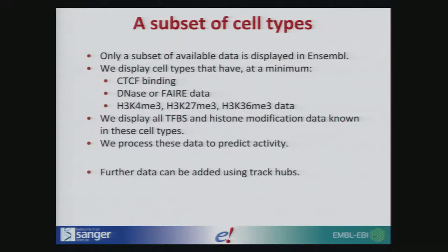We're working with a subset of cell types. In order to build our predicted promoters, enhancers, and insulators, we need CTCF binding, a marker of open chromatin, and these three histone modifications. If we have this data for a cell type, we will then carry out our regulatory build on that cell type and display all data known for that cell type. We also have the option to add further data using Track Hubs, and I will show you how to do that.